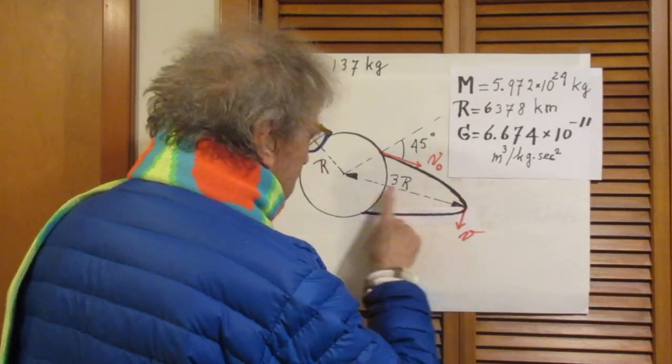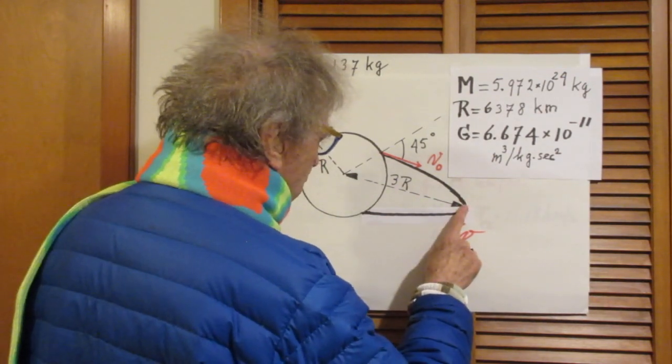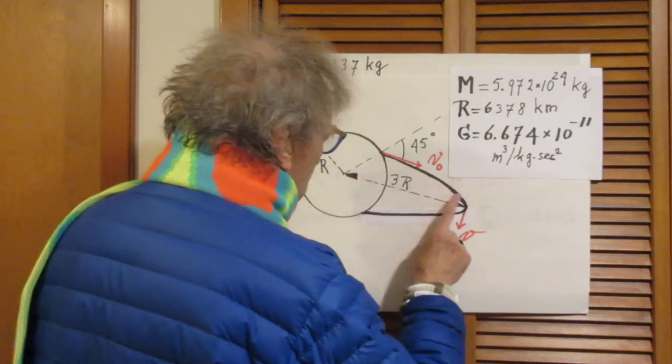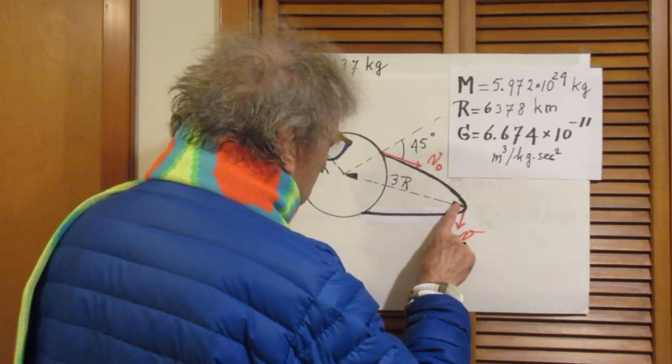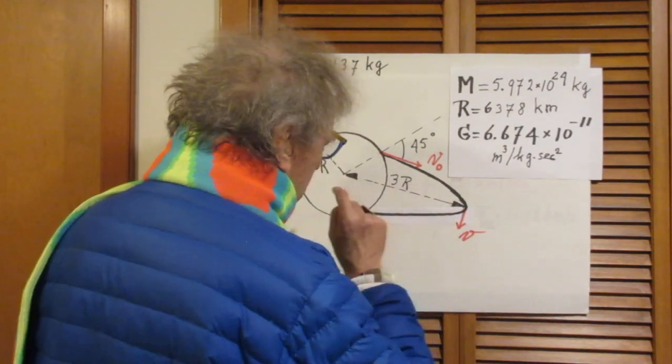Right here, at its farthest distance from the Earth, the distance from here to there is three capital R, three radii.